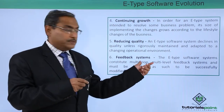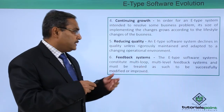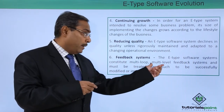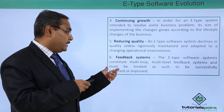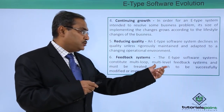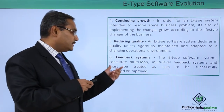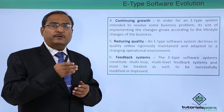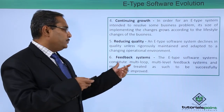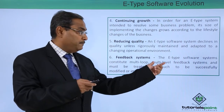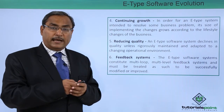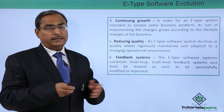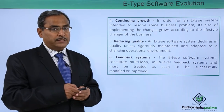The sixth law is feedback systems. E-type software systems constitute multi-loop, multi-level feedback systems and must be treated as such to be successfully modified or improved. Depending upon the feedback obtained through multi-loop or multi-level feedback systems, the feedback has to be analyzed and changes are to be brought into the respective software.